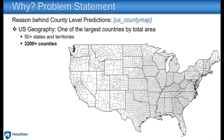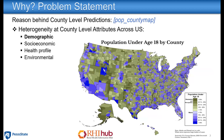The question remains: why county-level prediction? The US is one of the largest countries in the world by total area, with 50 plus states and territories. If you look at counties, there are 3,200 plus counties, which is clearly seen on this map. This introduces a lot of heterogeneity at the county level across different aspects — demographic, socioeconomic, health profile, and environmental — all of which are essential in deciding COVID-19 spread in early stages. This is an example of how the population under age 18 looks across different US counties, and you can see there is a lot of heterogeneity.